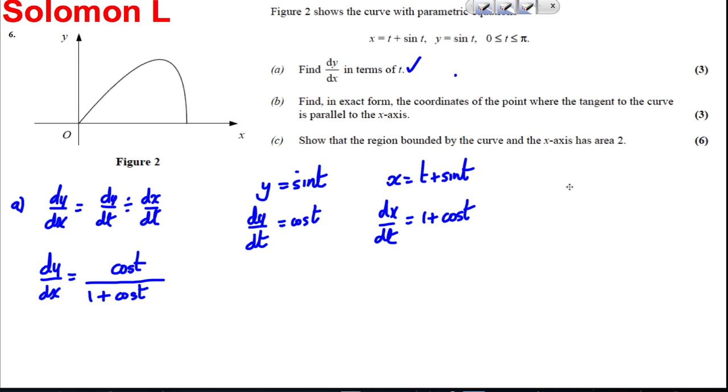Okay, I'm going to rub these out. And I'm going to do part B. For part B, it says find in exact form the coordinates of the point where the tangent is parallel to the x-axis. What we need for this, as I said previously, we're looking for this point here where dy by dx is 0. So we're solving dy by dx equals 0.